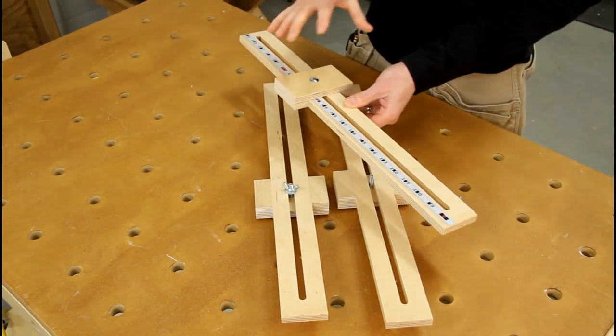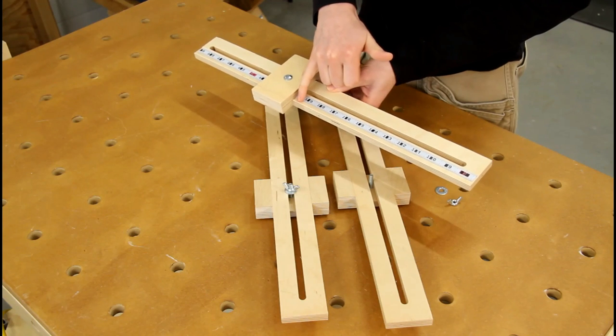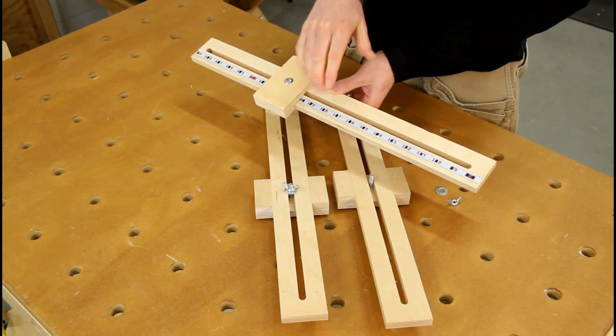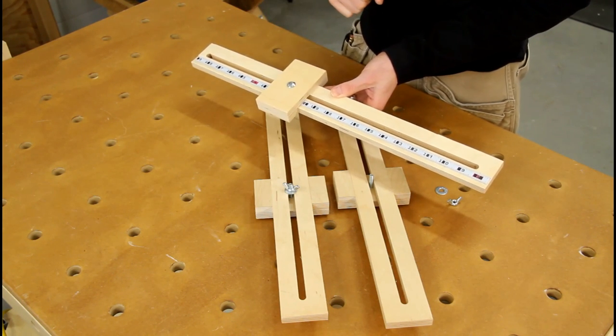So the setting jig is made in the same way, except it has a shallow dado milled in the face of it, so that the bench tape, the adhesive back bench tape, can be applied and sit just below the surface, so it doesn't interfere with the stop block at all.